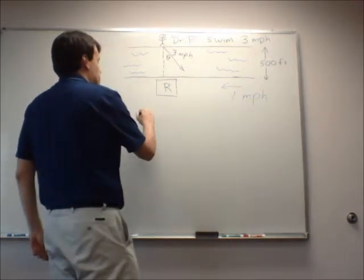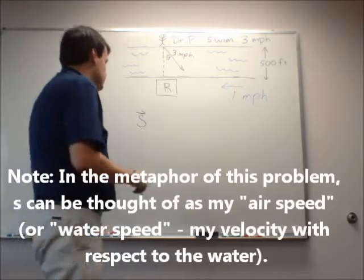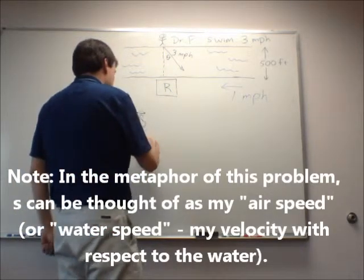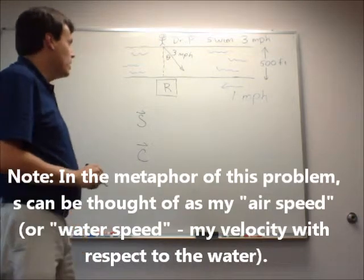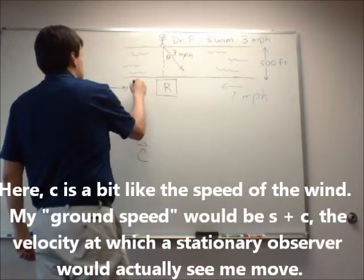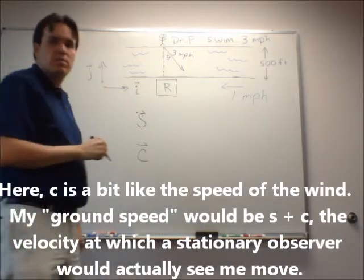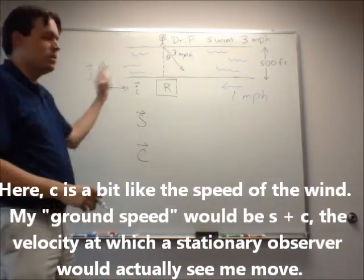Okay, so I have two vectors. There's s, which is my swimming velocity. And there's c, which is the current velocity. If I set up a coordinate system in which this direction is the positive i direction, and this direction up is the j direction in my picture. Okay, so i and j.